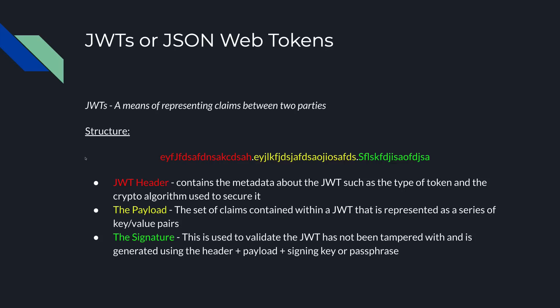The structure of a JSON Web Token looks something like this. Starting off in red we have the JWT header, which contains metadata about the token such as the type and the cryptographic algorithm used to secure it. Next in yellow we have the payload — a set of claims contained within the token represented as key-value pairs. And finally in green we have the signature, which is used to validate that the token has not been tampered with. It's generated using the header plus the payload and a signing key or passphrase.